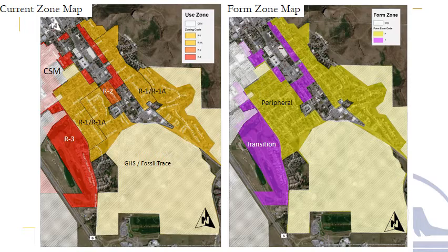This video provides you with the methodology that was used to apply our form zone overlays to the residential portions of the central neighborhoods, and it's intended to be viewed prior to filling out a brief questionnaire embedded in this project's Guiding Golden page. This video is intended for individuals who rent or own residentially zoned property in the central neighborhoods, but of course all are welcome to view.